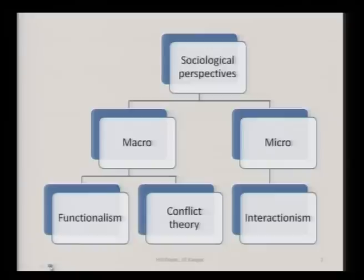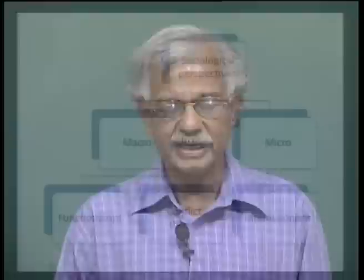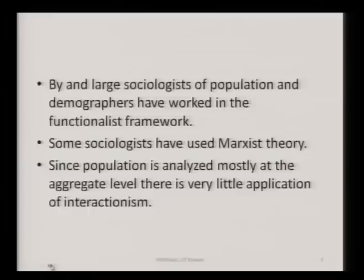There are some more advanced perspectives which we are not dealing with in this course because population scientists have generally not used them. Some of the early theories of sociology were functional in nature — Emile Durkheim, Talcott Parsons, or anthropologists like Radcliffe-Brown or Malinowski used the functional perspective. In functional perspective, we equate society with a biological organism and focus on order, consensus, and equilibrium. In conflict theory, we look at change and divide society into a number of groups. By and large, sociologists of population and demographers have worked in the functionalist perspective.